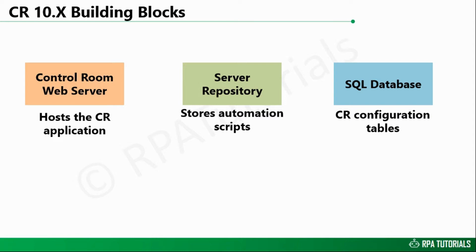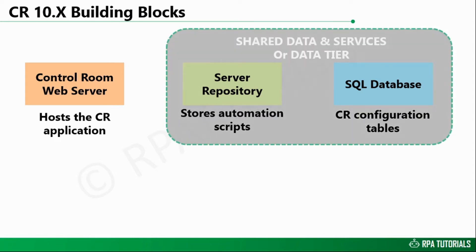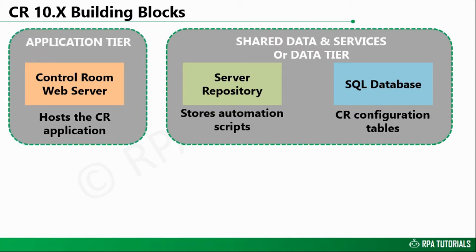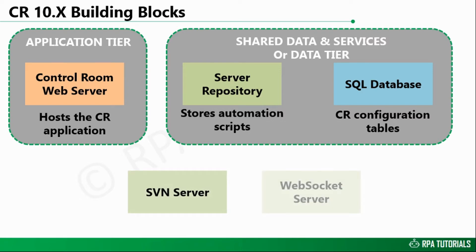The server repository and SQL Database are also collectively known as Shared Data and Services, or the Data Tier. And the web server is also known as the Application Tier. Additionally, depending upon your requirement, you might also have a SVN server if you want to enable versioning control of your scripts, and a web socket server if a secured SSL connection is required to the Control Room.